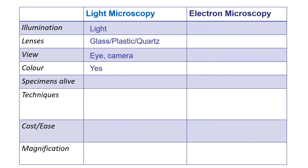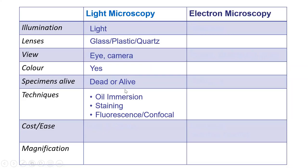Specimens in light microscopy are in color — you'll see there's a difference with electron microscopy where things are not in color. As for whether specimens are alive: it could be either — some stains will kill them and some won't, depending on the specimen. Techniques include staining, fluorescence, and confocal microscopy, along with many other ways to shine light at different angles to improve contrast.